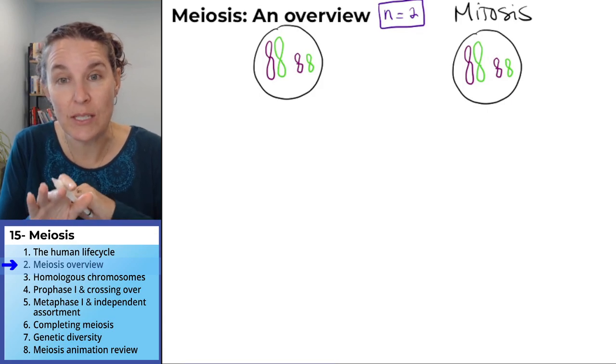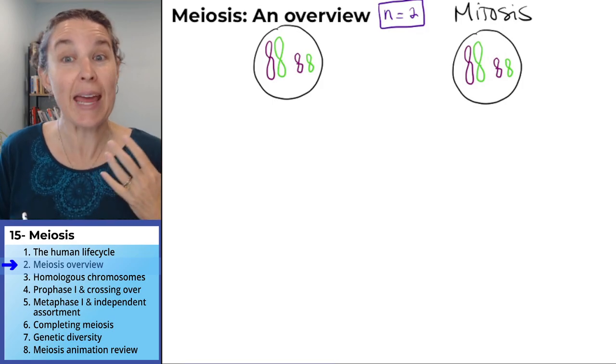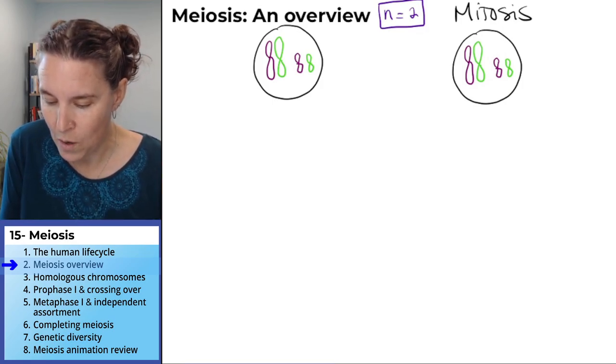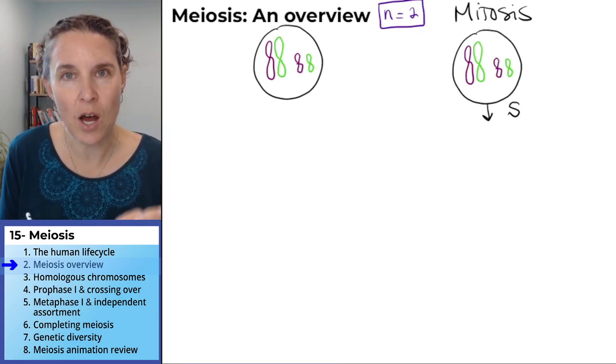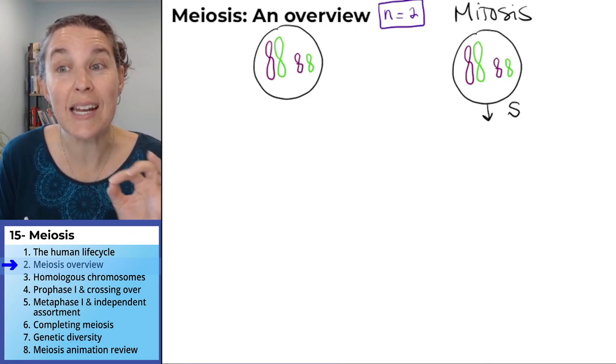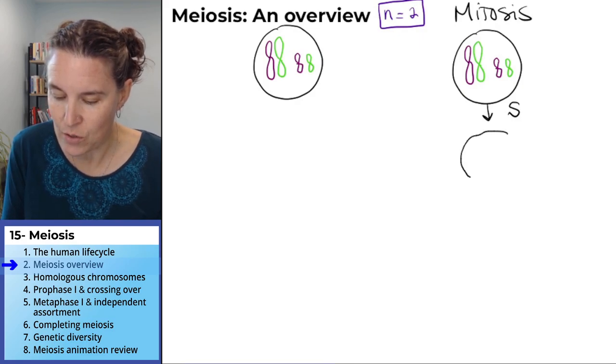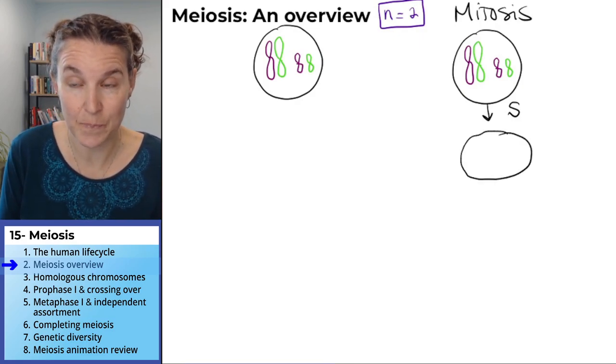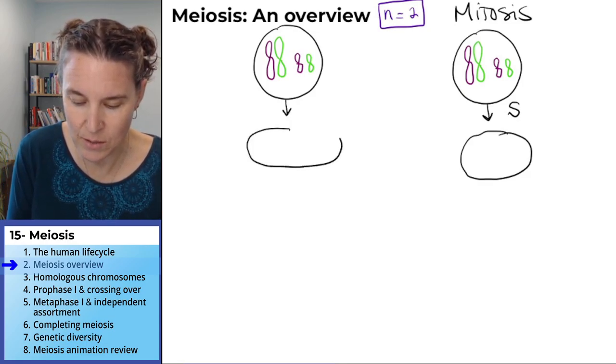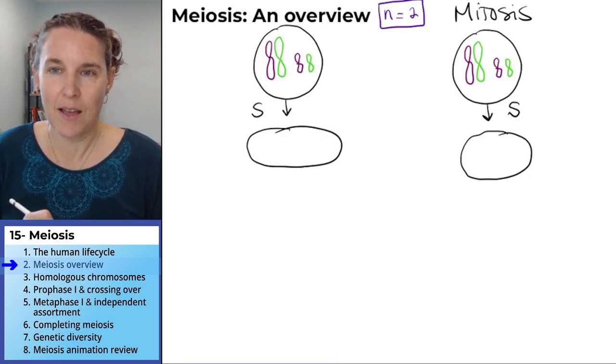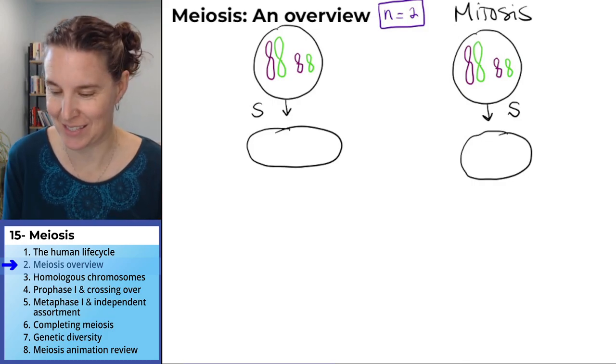I threw mitosis on the right side of this diagram. And again, it should be familiar. The first thing I want to draw, I want to acknowledge what is going to happen to that cell, what that cell is going to look like if it goes through the S stage of interphase. Mitosis does it and guess what? So does meiosis.